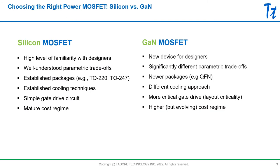Let's first list the differences between silicon MOSFETs and GaN MOSFETs to appreciate the challenge of selecting the right GaN. As power electronics designers, you may be more familiar with silicon MOSFETs in terms of parametric trade-offs, their established packages, what kind of cooling techniques are required, and what kind of gate drive circuits are required. And generally, there is a very mature cost regime with silicon MOSFETs.